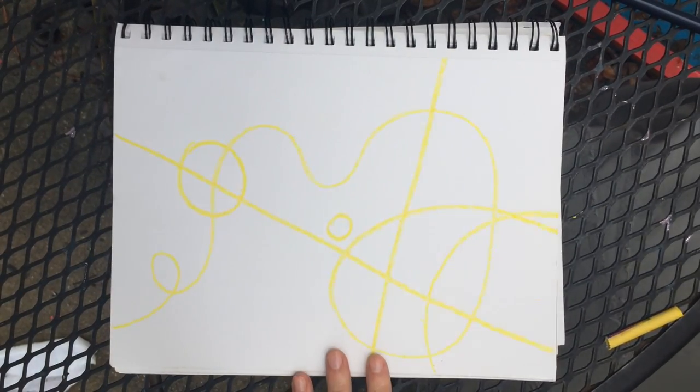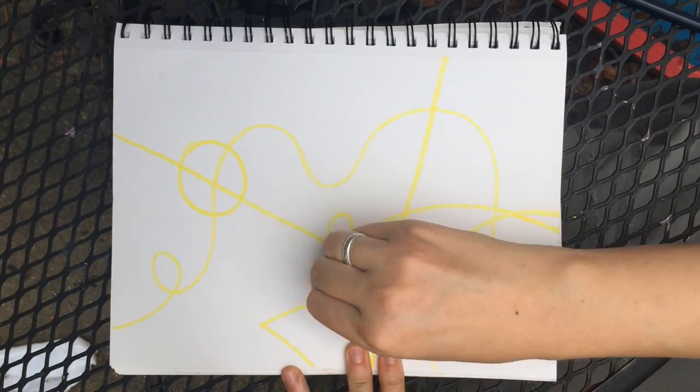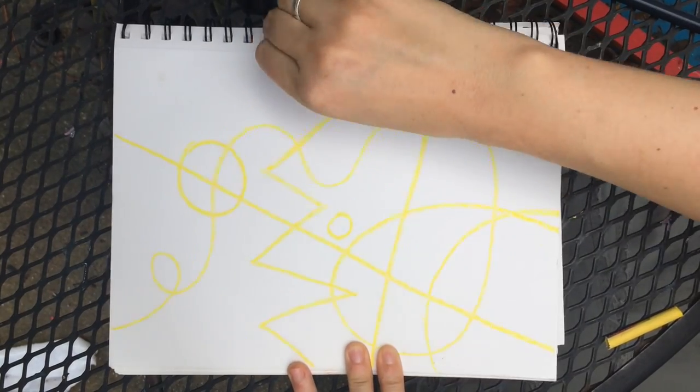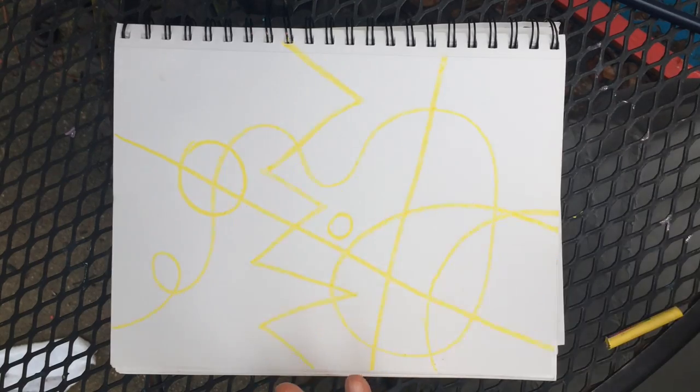Now we're going to make one zig-zaggy line. How does a zig-zaggy line go? Go zig, zig, zig, zig, zig. Yes. Okay, and I think just for fun we're going to make a blob.